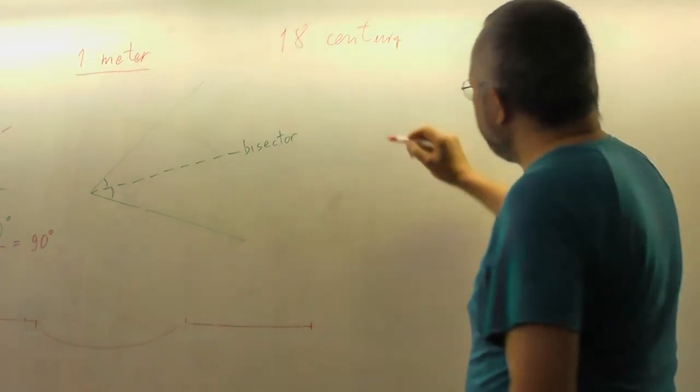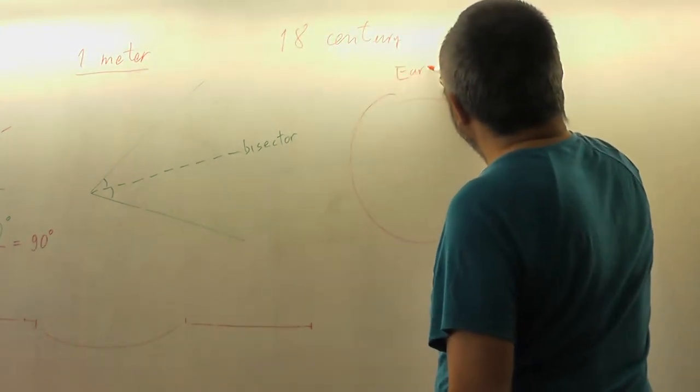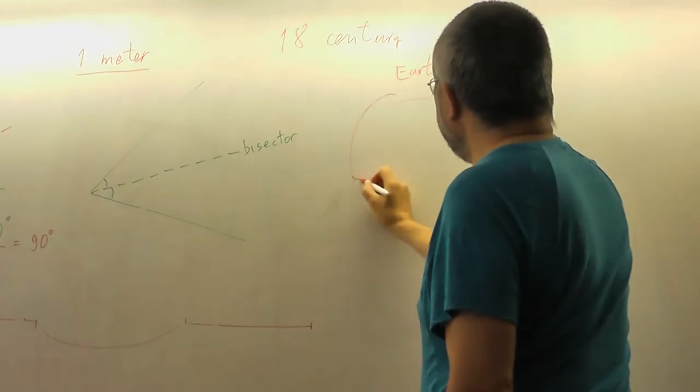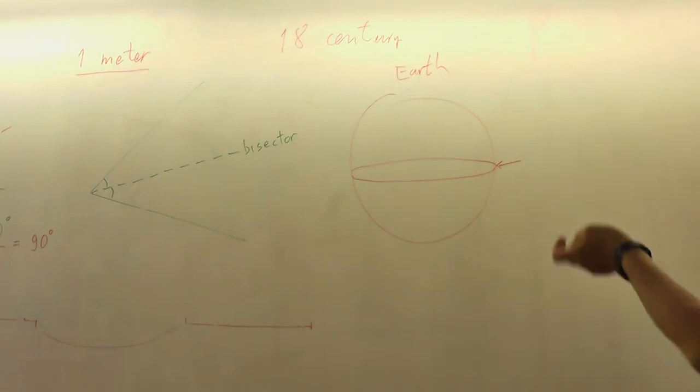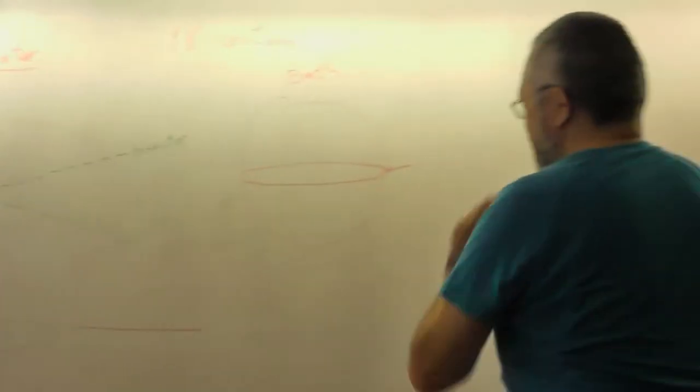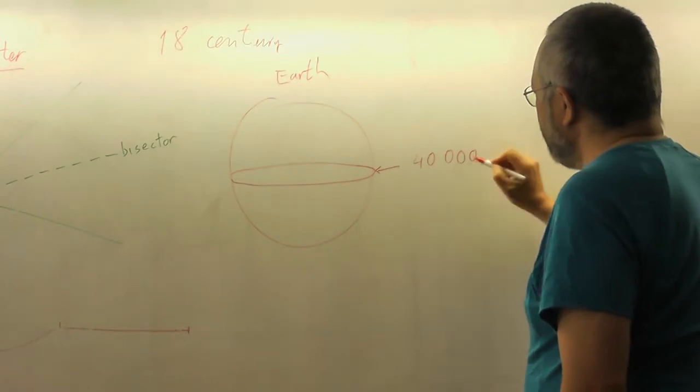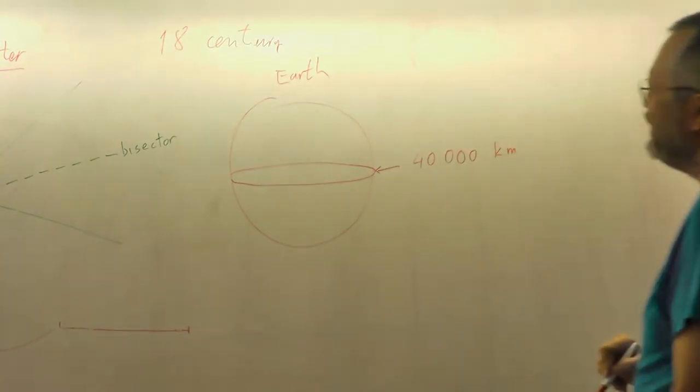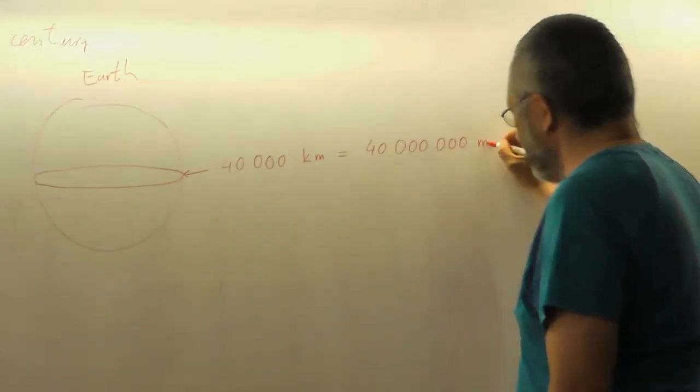Okay, so they decided that the Earth should be exactly, even the sphere actually, it's not a sphere, but let's forget about this, it should be 40,000 kilometers, so it should be 40 millions of meters.